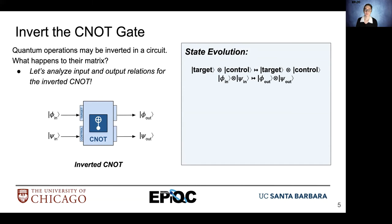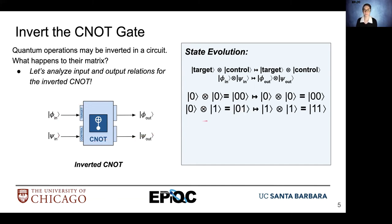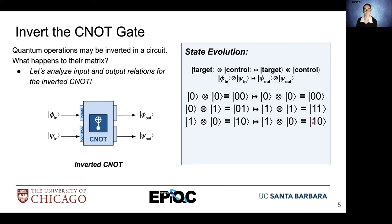We can do some analysis on our circuit and see what the corresponding input and output combinations are. Input 0,0 results in output 0,0. Remember, the first qubit is now the target and the second qubit is now the control. Input 0,1 means the control is 1, so that results in a flip of the target, giving output 1,1. Input 1,0 means the target is 1 and control is 0, so the output is 1,0. And input 1,1 causes the target to toggle, giving output 0,1.